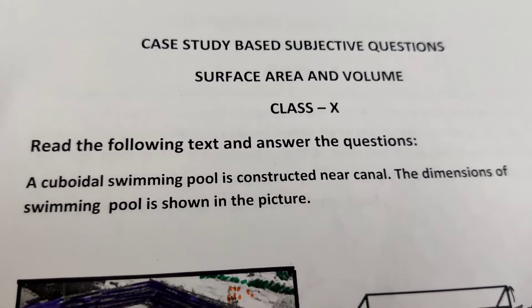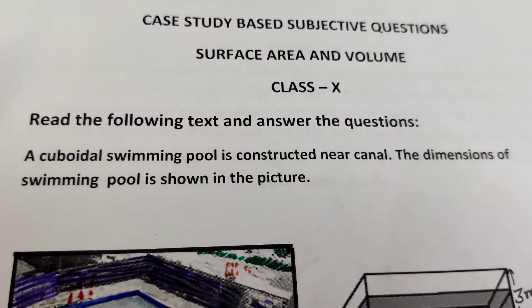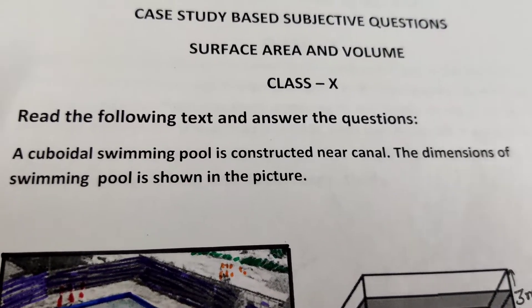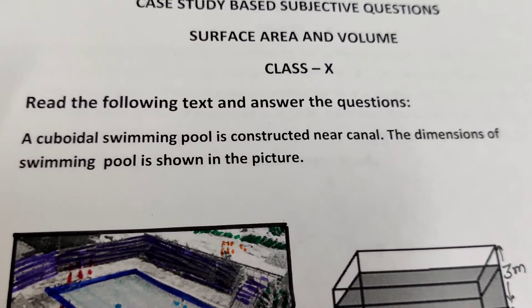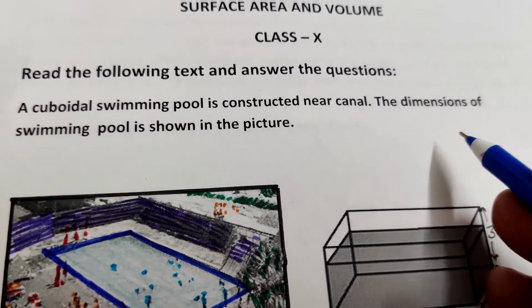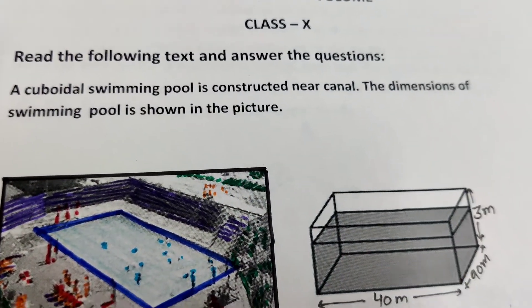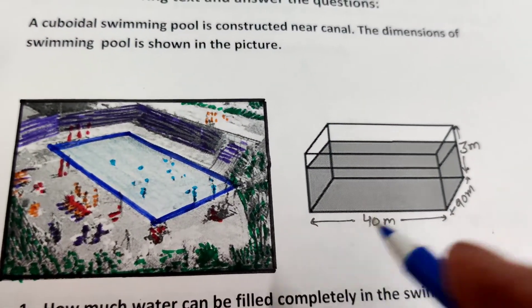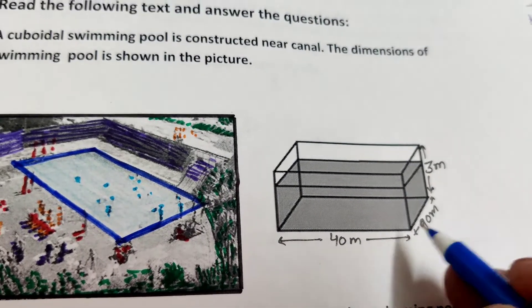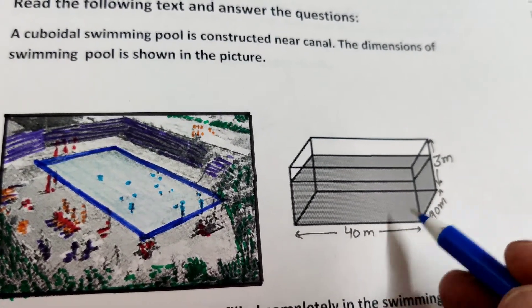Study-based question, subjective type, surface area and volume, class 10. Read the following text and answer the questions. A cuboidal swimming pool is constructed near a canal. The dimensions of the swimming pool are shown in the figure. The pool dimensions are: length 90 meters, breadth 40 meters, and height 3 meters.